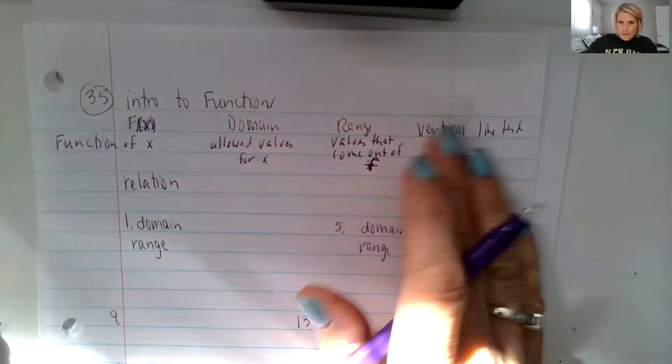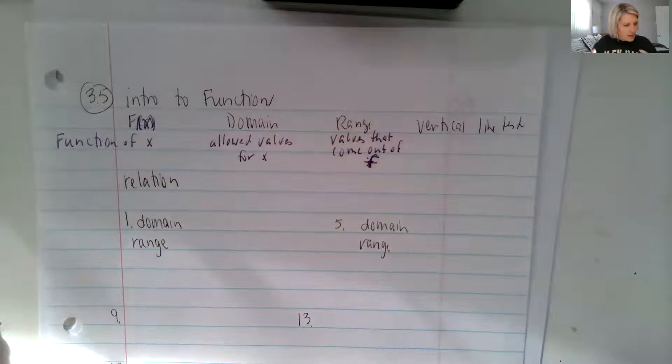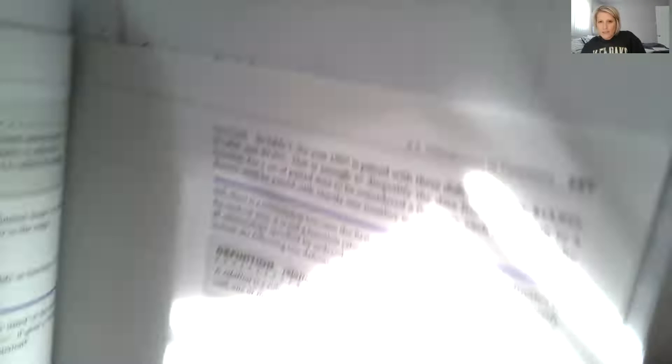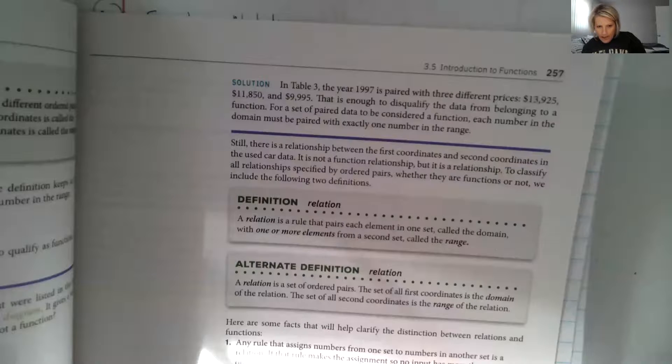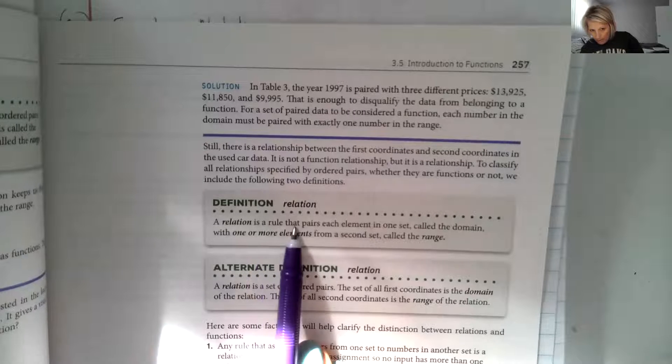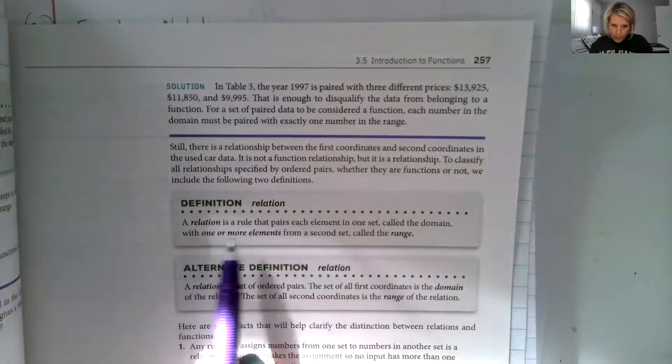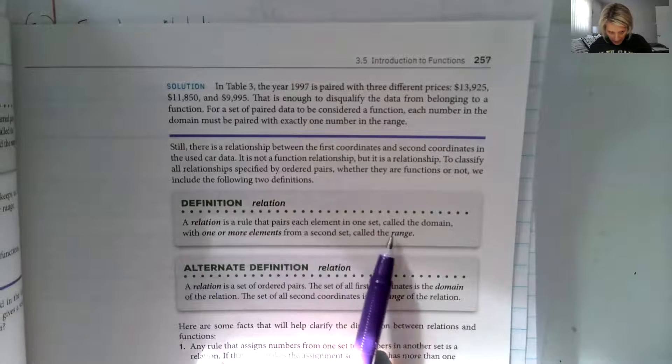Okay. So before we talk about the vertical line test, I want to go back to a relation. A relation is how inputs are related to outputs. So if you go to page 257 in our book, it describes a relation on page 257 as a rule that pairs each element in one set called the domain with one or more elements from a second set called the range.